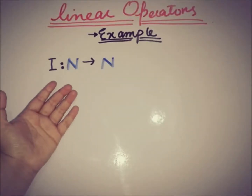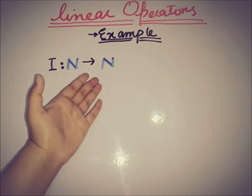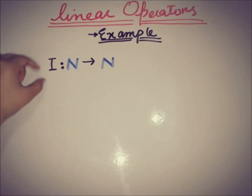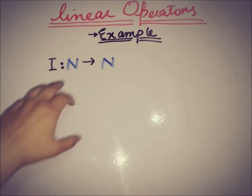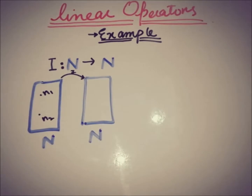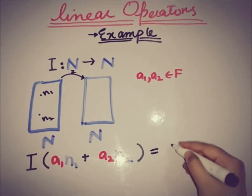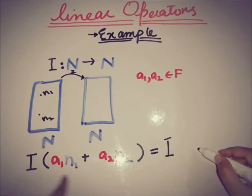Here we have a linear topological space. I is an operator because N is a linear topological space, so I is an operator from N to N. We are going to check whether the identity operator is linear or not. First, we pick two elements from the linear topological space N and two elements from the field, and we apply the operator.